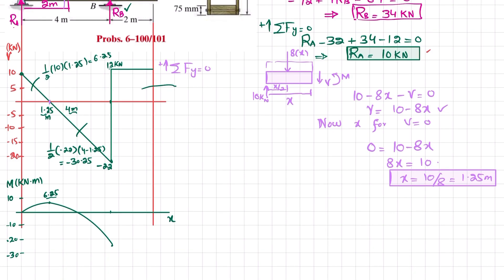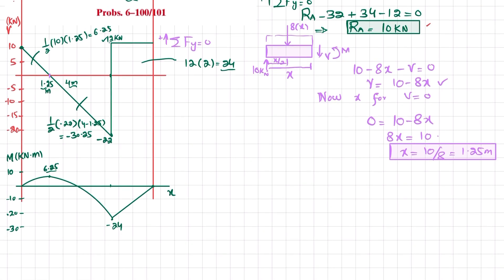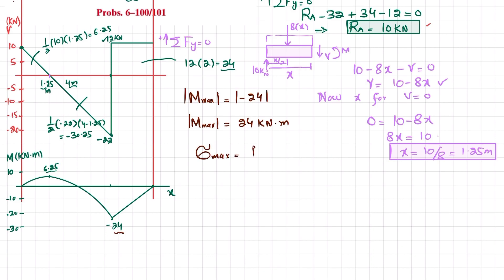The third area under the shear force diagram is a rectangle: 12 times 2 equals 24. So minus 24 plus 24 brings the bending moment back to zero. This segment is a straight line because the shear force is constant there. We have now drawn the complete shear force and bending moment diagram. The maximum absolute value of bending moment is 24 kilonewton-meters.